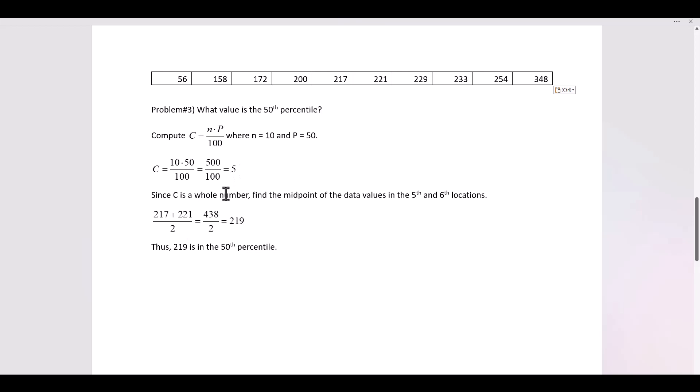C is now a whole number. So when C is a whole number, we have to count 5 spaces, 1, 2, 3, 4, 5, plus 1 more space, and find the midpoint of the two data values.